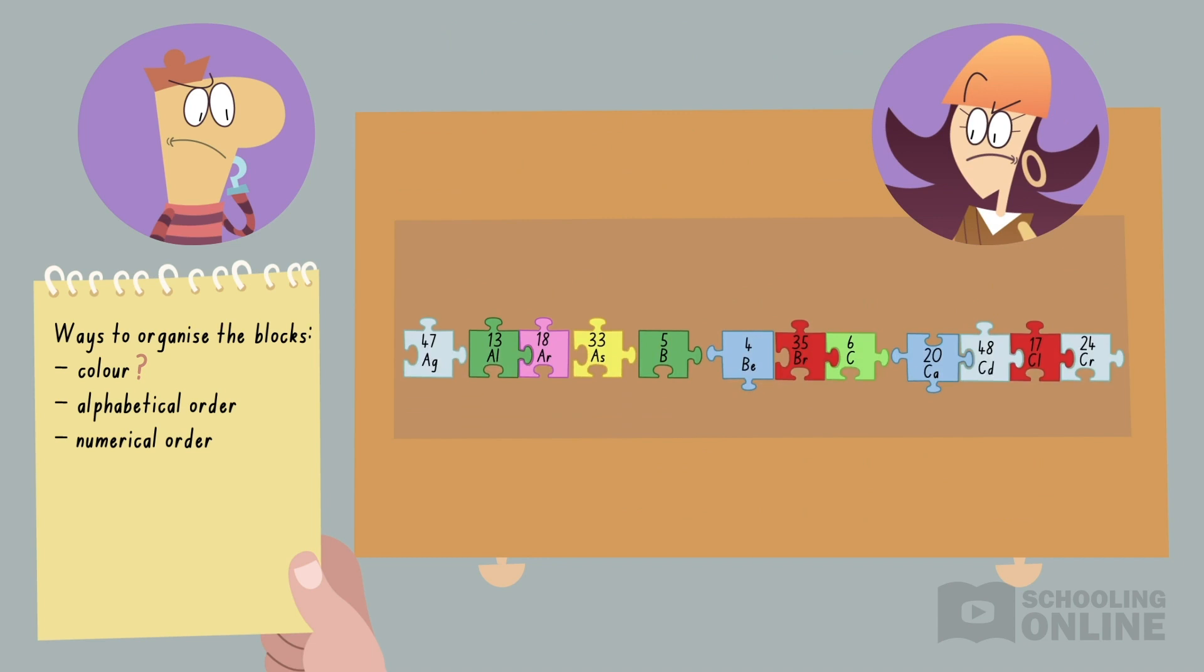Next, they place the blocks in alphabetical order across the table. Unfortunately, the jigsaw pieces don't match. To make things worse, the colours are disorganised. They'll need to try again.